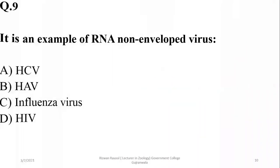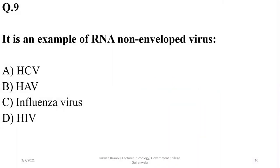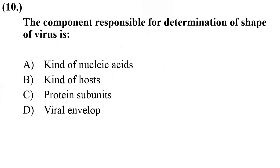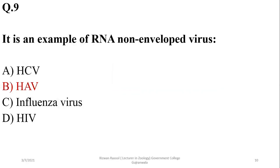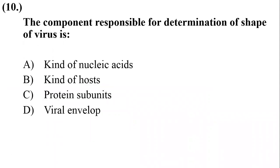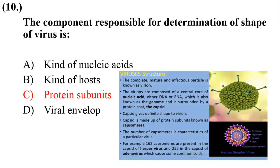HAV is an example of an RNA-enveloped virus — actually it is an RNA virus without an envelope. The component responsible for determining the shape of the virus is the protein subunit or capsomere. There are 162 capsomeres in the herpes virus and 252 in the capsid of adenovirus. The number of capsomeres is characteristic of a particular virus; they are protein subunits that make up the capsid, which gives the proper shape to the virus particle.